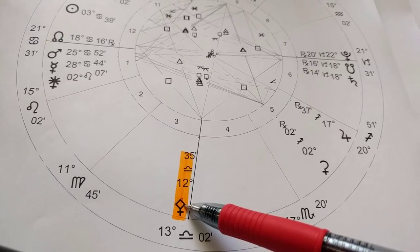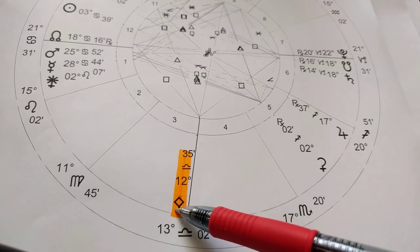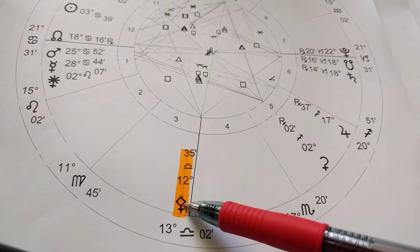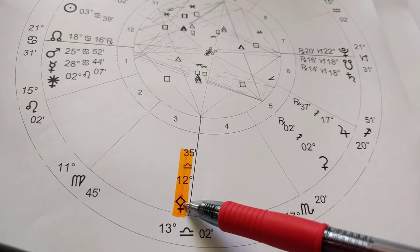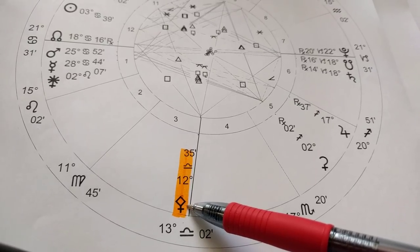Where Pallas Athena shows up for you is where you have leadership potentials. Now, it does depend, of course, on the sign that she's in as well as the house placement. If she makes any exact aspects to any of your natal planets, especially the personal planets, she activates those personal planets.